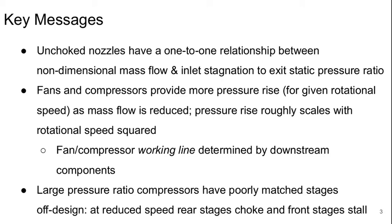A fan or compressor working line is determined by its downstream components. Large pressure ratio compressors have poorly matched stages at off-design conditions, and therefore at reduced speed the rear stages can choke at the same time the front stages are going into stall.